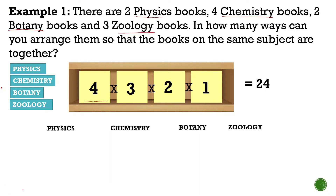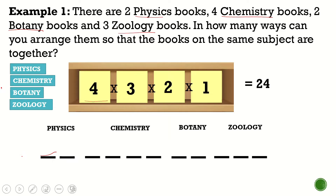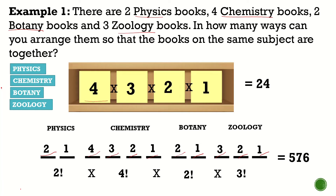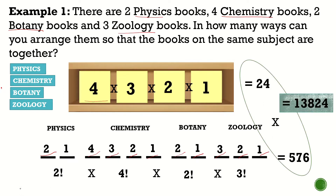That is the arrangement of those groups of books. Now we also need to consider the arrangement within each group. For physics, there are two books: 2 × 1. For chemistry, there are four books: 4 × 3 × 2 × 1. For botany, two books: 2 × 1. For zoology, three books: 3 × 2 × 1. We multiply all of them, so it's 2! × 4! × 2! × 3!, which equals 576. We then multiply the two results: 24 × 576 = 13,824.